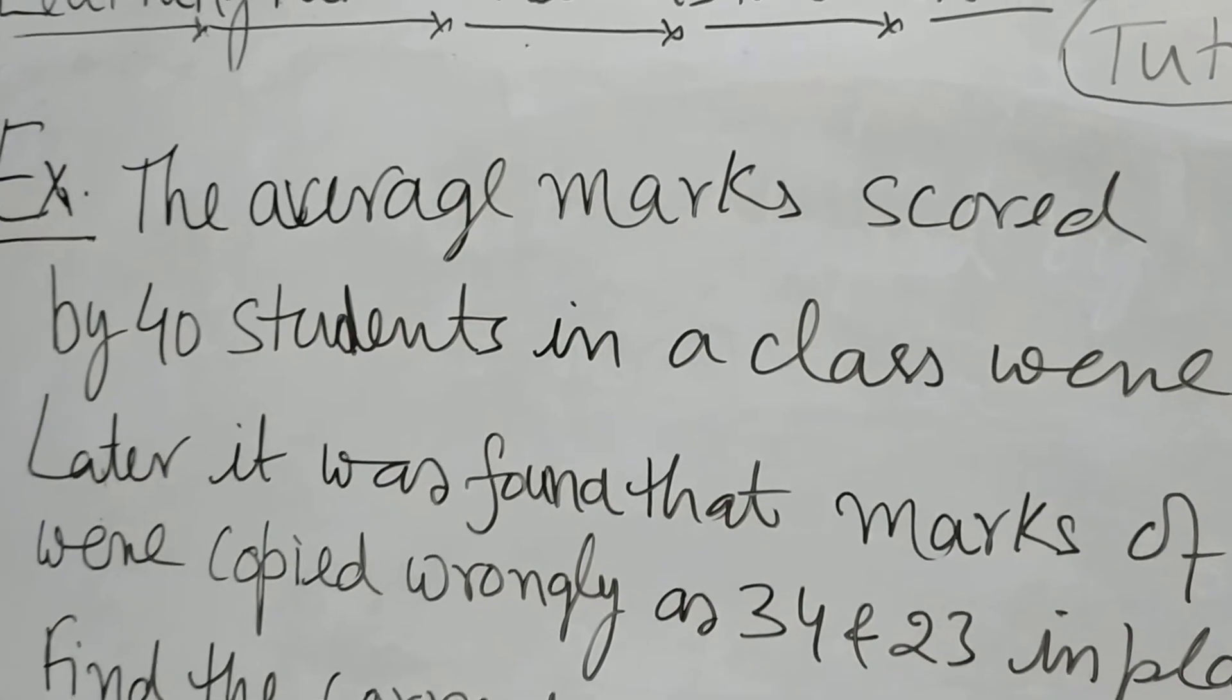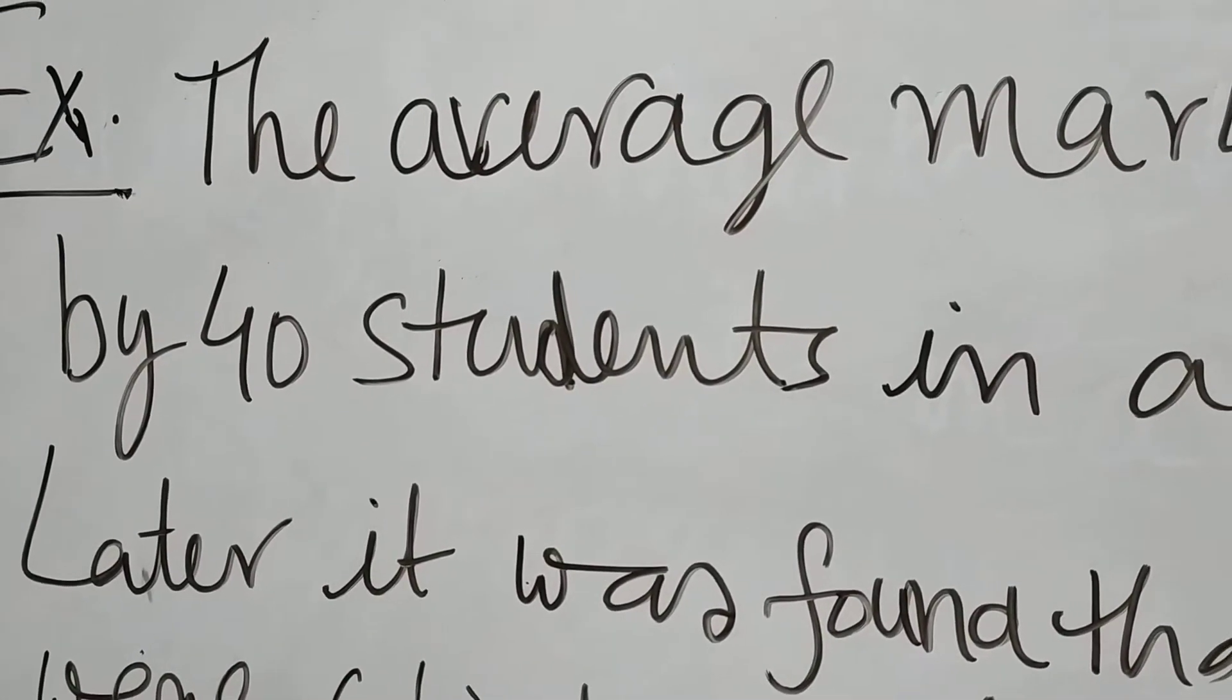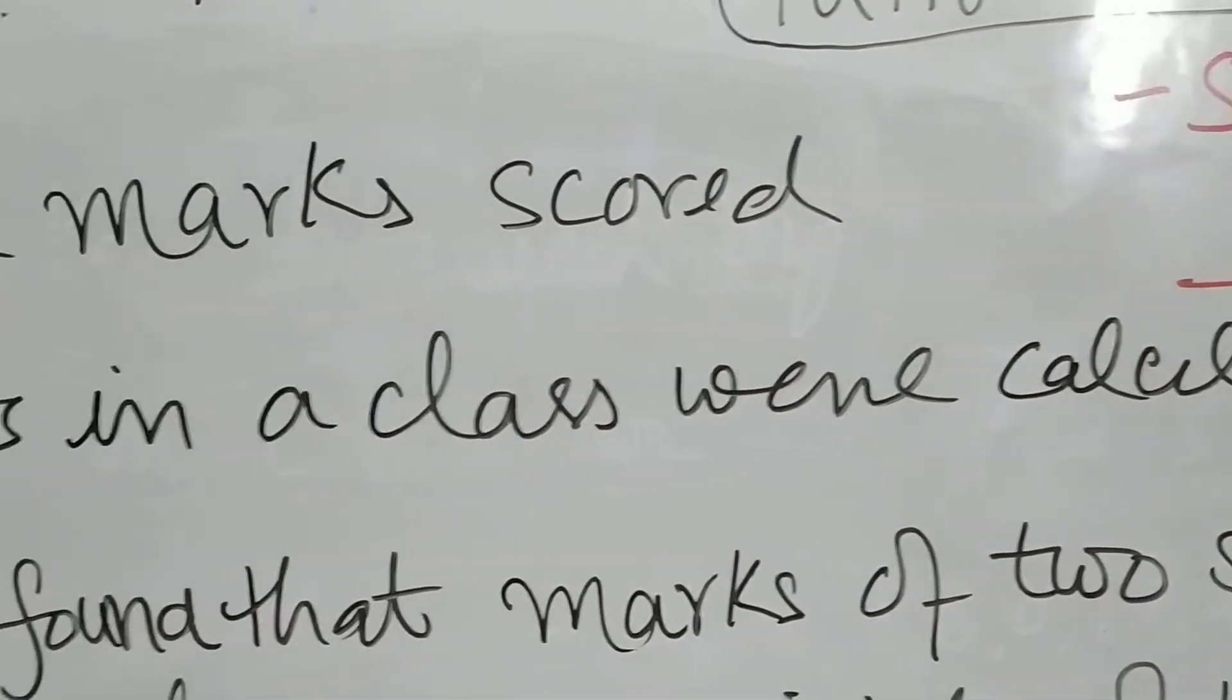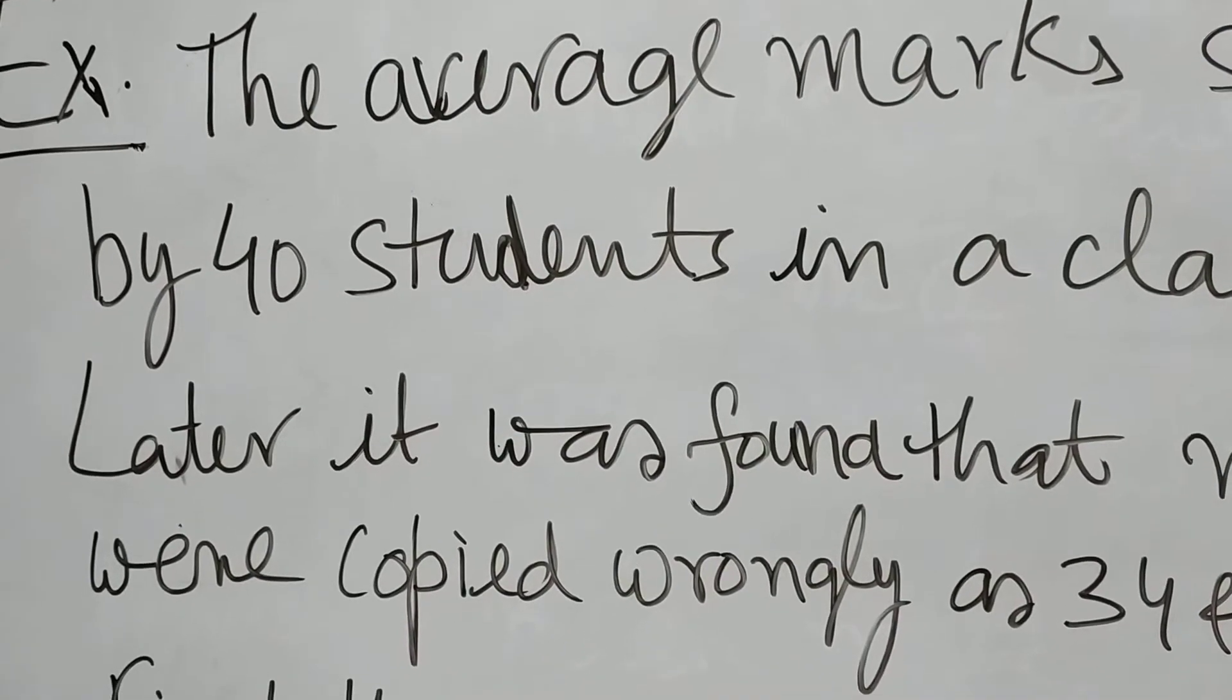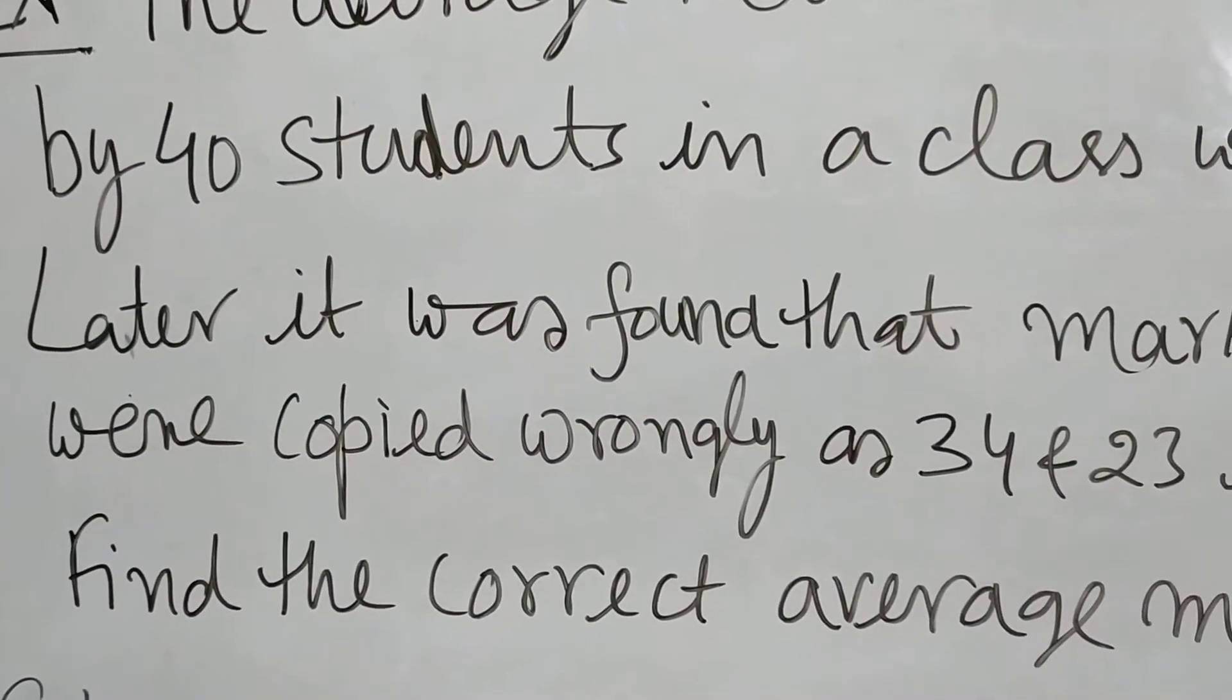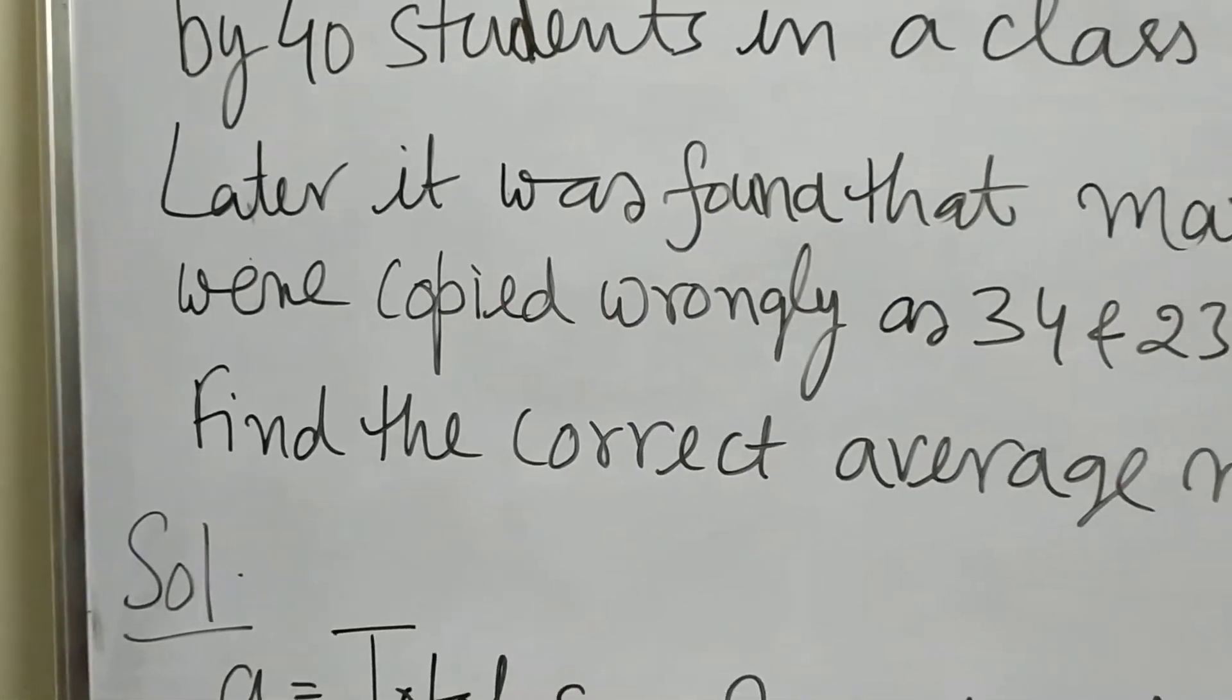The given question is: the average marks scored by 40 students in a class were calculated to be 36. Later it was found that marks of two students were copied wrongly as 34 and 23 in place of 43 and 32. Find the correct average marks.